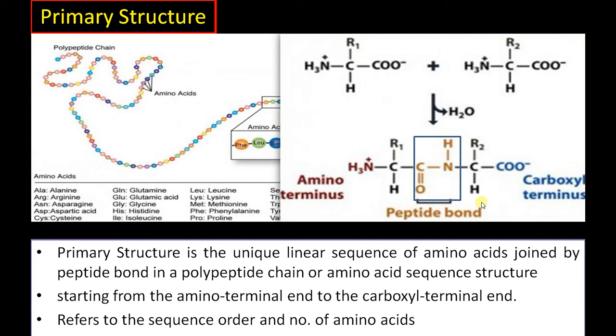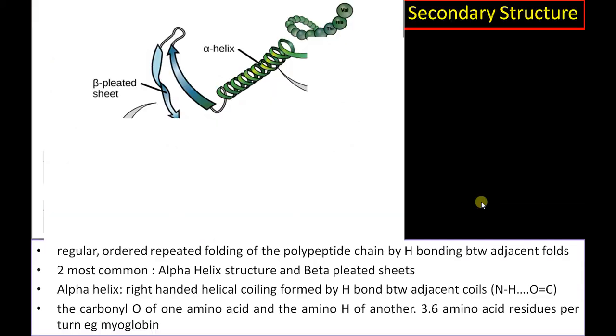Each protein has a unique sequence of amino acids, or primary structure, that is determined by the gene sequence.